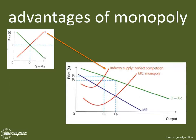Now we're going to look at the advantages of monopoly. One important thing to account for is where the supply curve comes from. In this well-drawn diagram by Jocelyn Blink from her course companion, she shows the supply curve in perfect competition — and you have to understand how that connects to the monopoly diagram.